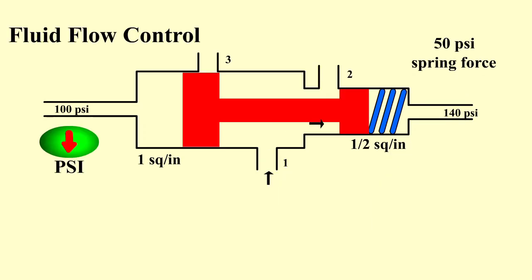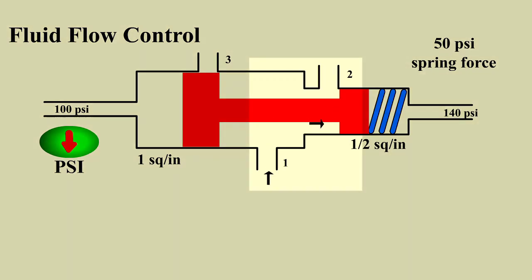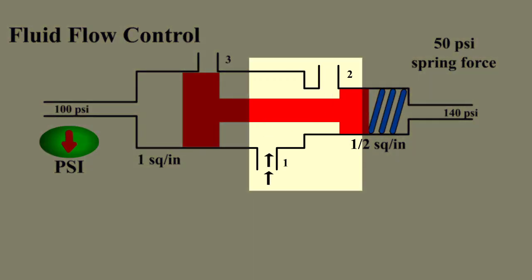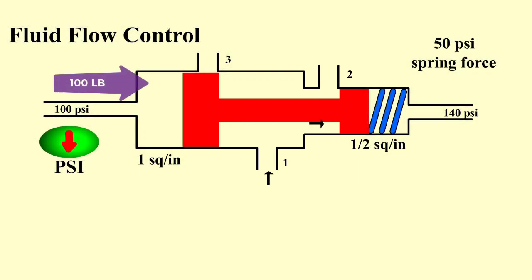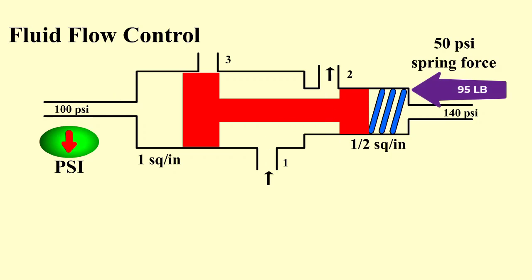So how does this apply to a spool valve and flow control? In this animation, fluid is coming in port 1 and passing out port 2. We have 100 pounds pushing the valve to the right and only 95 pounds pushing the valve to the left. Therefore the valve stays in the right hand position and the flow goes from port 1 to port 2.